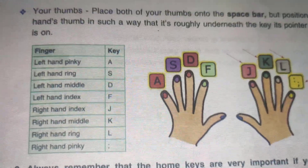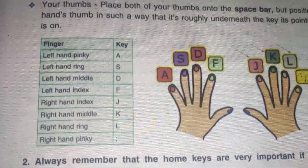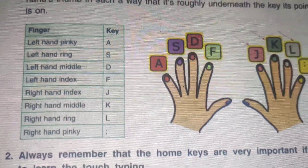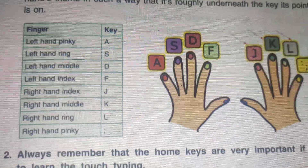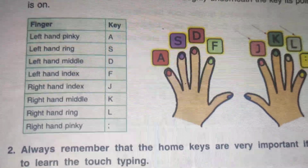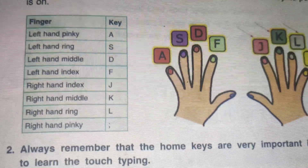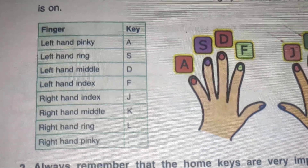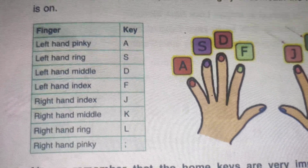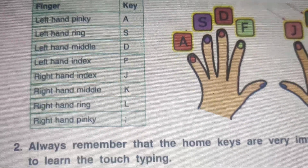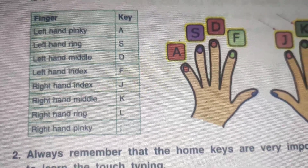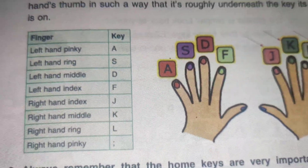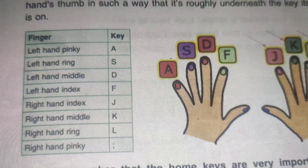Here is the finger-to-key mapping: left hand pinky on A, left hand ring finger on S, left hand middle finger on D, left hand index finger on F. Right hand index finger on J, right hand middle finger on K, right hand ring finger on L, and right hand pinky finger on semicolon.